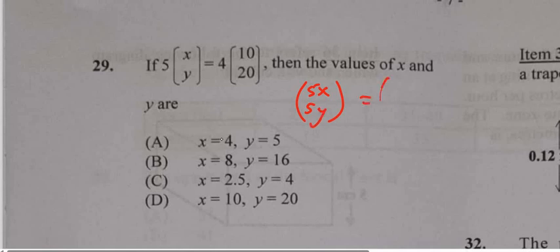Then we're going to have 40 and 80. Do you see how we got those? We simply multiply 5 by x, then 5 by y, 4 by 10, then 4 by 20.